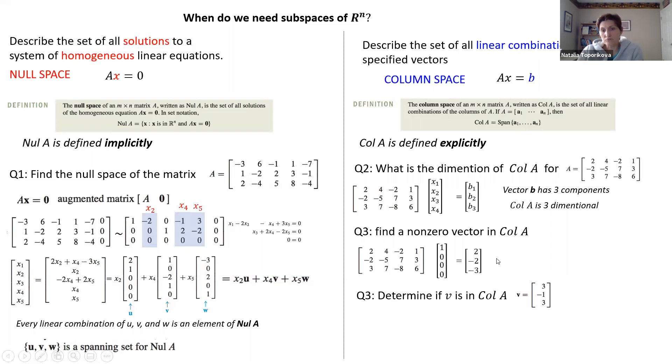Finally, we might want to know if a certain given vector belongs to our column space. For example, here's a vector v, 3, minus 1, 3. Does it belong to our column space? In other words, we are always asking, is our vector v the solution of matrix equation Ax equals v?